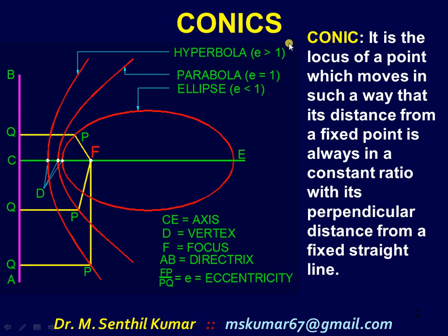Conics is the locus of a point which moves in such a way that the distance from a fixed point is always in a constant ratio with its perpendicular distance from a fixed straight line. Here, AB is the fixed straight line and the fixed point is F. For example, the ellipse is our object. The point P moves on this ellipse, and it should maintain the constant ratio such that FP by PQ is always a constant. That is the definition for conics.